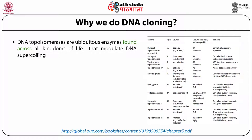DNA gyrase, a type 2A topoisomerase from E. coli, is a homodimer with two different subunits — gyrase A and gyrase B — of 97 and 90 amino acids respectively. It is crucial in introducing negative supercoils and relieving torsional stress in front of the replication and transcription machinery.